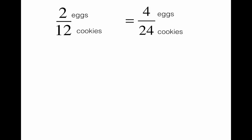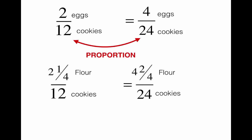There's our ratio. The reason we're doing this is because that's a proportional relationship — those two fractions are actually equal to each other. Two eggs over 12 cookies equals four eggs over 24 cookies. And two and one-fourth cups of flour for 12 cookies is the same as four and two-fourths cups of flour for 24 cookies. That's a proportion — proportional relationships are when you have these equal fractions.